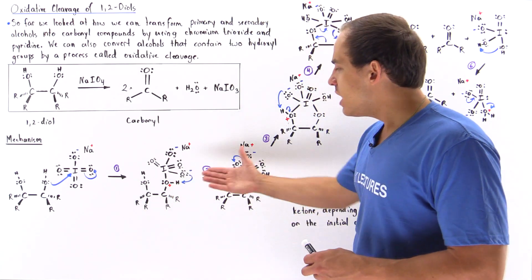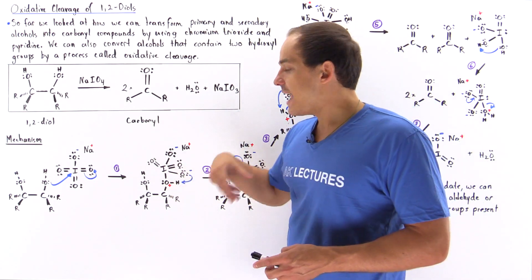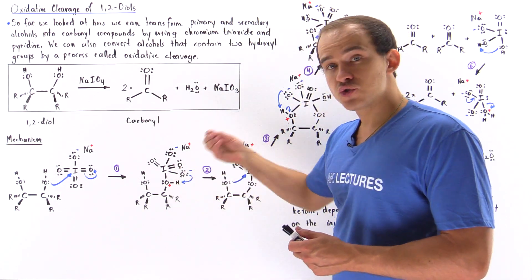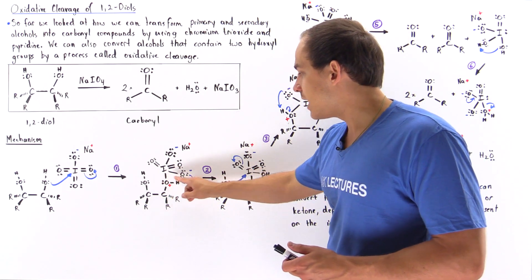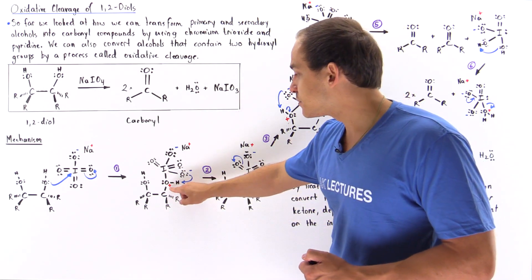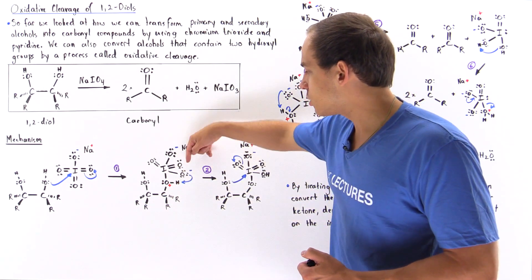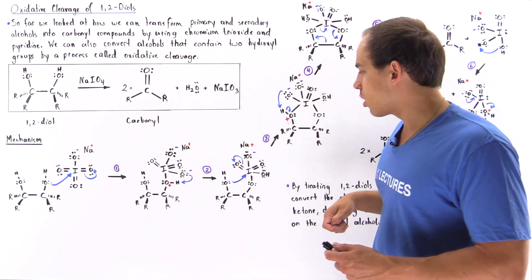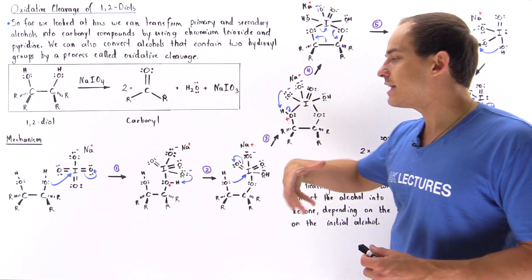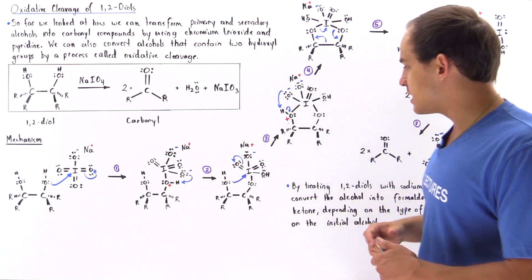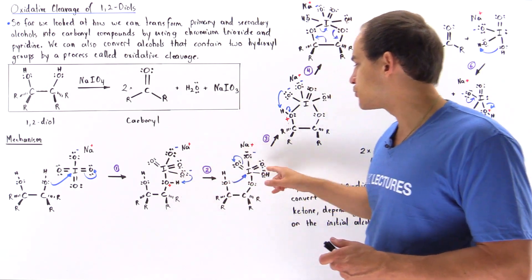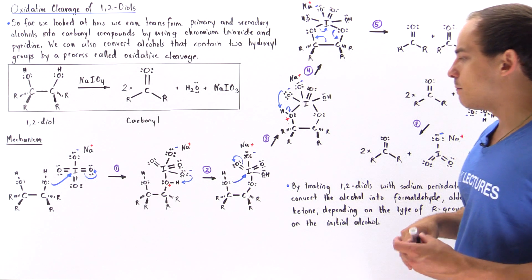In step two, we have a proton transfer. The H atom is transferred from the positively charged oxygen onto the negatively charged oxygen, removing both charges. We form a slightly more stable intermediate molecule because we now have fewer charges.